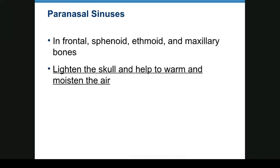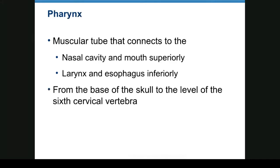Paranasal sinuses are in the frontal, sphenoid, ethmoid, and maxillary bones. They are there to physically make the skull lighter in weight, and also air goes through them to be warmed and moistened. The pharynx is a muscular tube that connects the nasal cavity and mouth superiorly to the larynx inferiorly. It goes from the base of the skull to the sixth cervical vertebra.